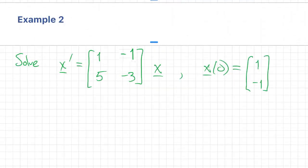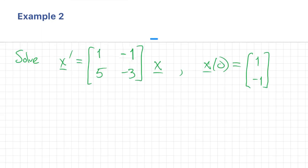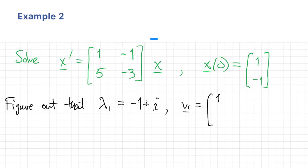Here's an example of an initial value problem with a two by two matrix. And we'll solve this by the matrix exponential. Once again, we can figure out what the eigenvalues and eigenvectors are. In this case, they are complex, which means that the other ones are complex conjugates.